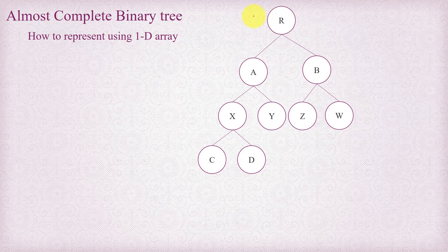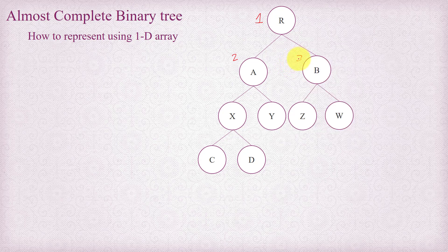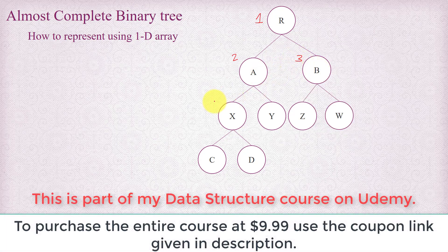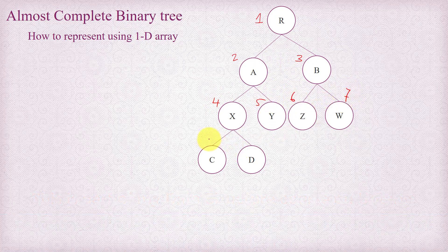In order to do that, we need to number each node of this almost complete binary tree starting from 1 for the root node, and we increase this number by one for each node level by level, left to right. So b is 3, this is 4, this is 5, this is 6, this is 7, 8 for c and 9 for this.